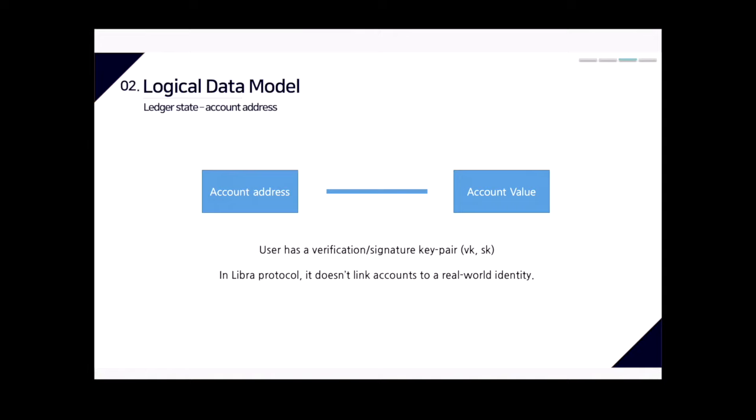Each version number I corresponds to the number of transactions the system has executed, and at each version the database contains a tuple of transaction, output, and ledger state. The Libra protocol uses an account-based data model to encode the ledger state, similar to Ethereum. The state is structured as a key-value store mapping account address keys to account address values. Importantly, the Libra protocol does not link accounts to a real-world identity.